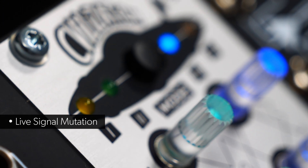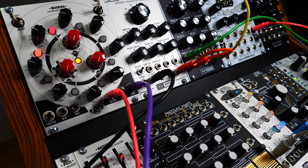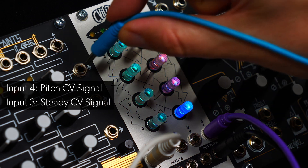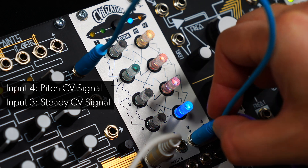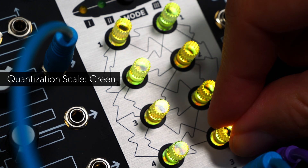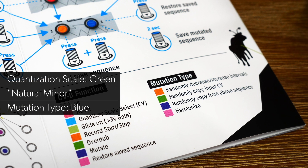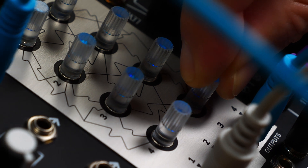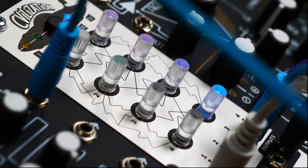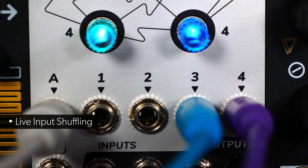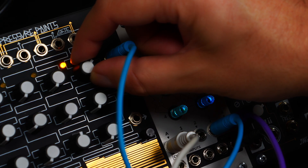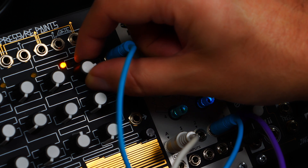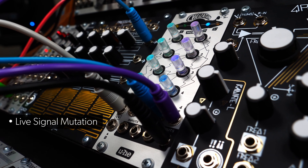Another really cool feature of Mode 3 is that you can manipulate a live signal with Civilization's mutation algorithms. Take an analog step sequencer and connect its CV output with Input 4. Next, we'll patch a steady CV signal from the pressure points module into the input of Track 3. For Track 4, we're setting the quantization scale to green, which is natural minor, and the mutation type to blue, which is randomly copy from the track above. Once we start adding the mutation, values from Track 3 will be randomly copied into Track 4. We're effectively shuffling signals from both tracks together. Listen as we tweak the pressure point CV knob to change the pitch of the mutated steps. Not only can you mutate a recorded sequence, but also a live signal.